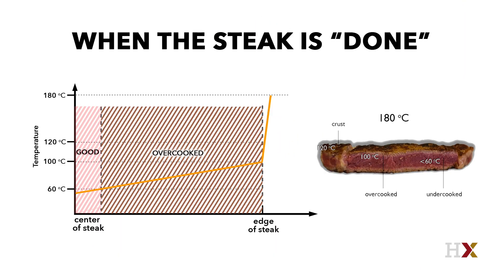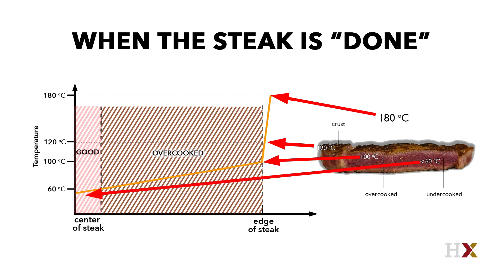If you imagine the temperature profile across the steak: at the outside of the steak, right outside, the temperature is the oven temperature — say 180 degrees Celsius. At the surface of the steak, you'd like to get it to 120 or 130 degrees so that the browning reactions give you the flavor you want. There's then a very thin layer where the temperature drops from 120-130 degrees down to 100 degrees, which is the boiling point of water — the temperature of the outermost water layer. Then the temperature continues down to 60 degrees in the middle.